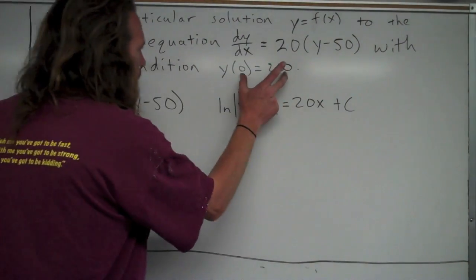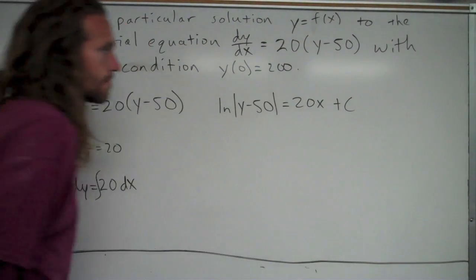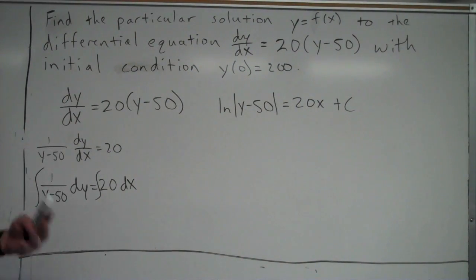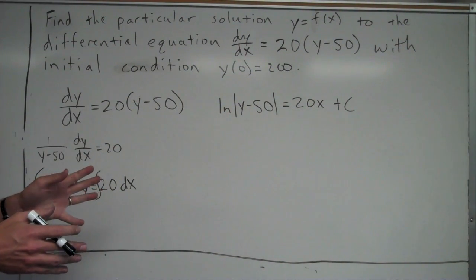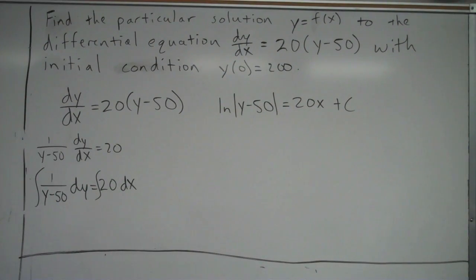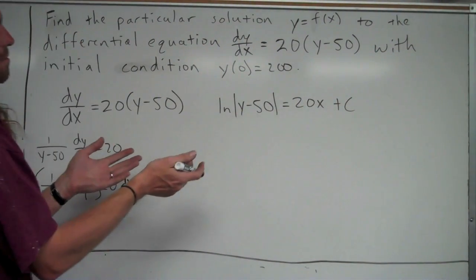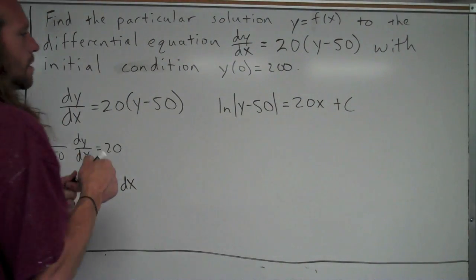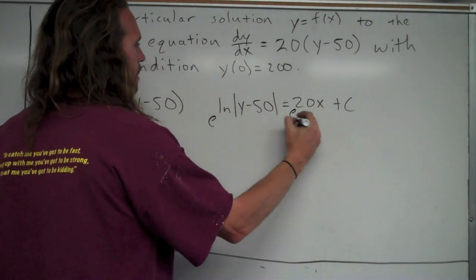Now, our initial condition, 0, 200, is what's going to help us find c. In many problems, you can just plug it in at this point, but I find that when you have a natural log and you have to raise both sides to e, I'd rather just use my initial condition at the end. So, my next thing I'll do is I'll solve for y. I need to get rid of this natural log, so I'll make both sides exponents of e.